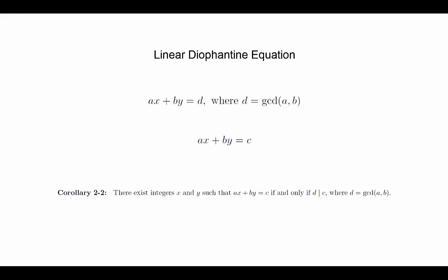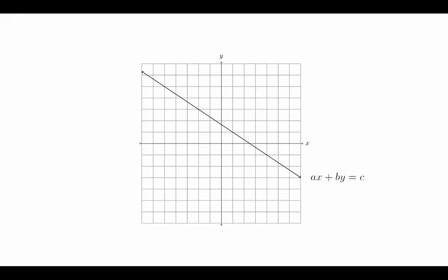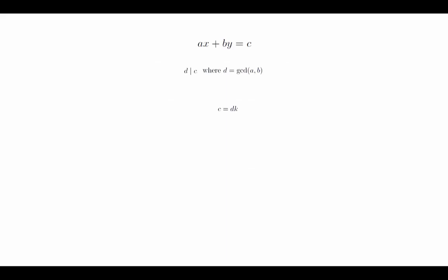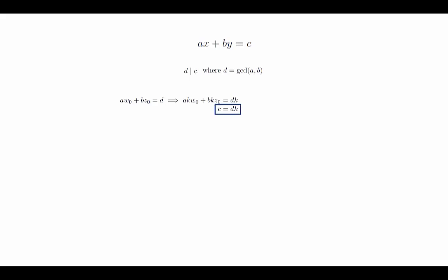We can look at this problem from the perspective of the Cartesian plane. The equation ax plus by equals c is the equation of a line. The points (x, y) where x and y are integers are lattice points on the plane. The question of finding solutions to the linear Diophantine equation is the same as trying to find points where the line crosses lattice points. Depending on the specific values of the parameters, there may be no lattice points or there may be infinitely many. Let's suppose that d divides c. Since d divides c, there exists an integer k such that c equals d times k. By corollary 2-2, we can find integers w0 and z0 such that a times w0 plus b times z0 equals d. We will multiply through by k, giving us a times kw0 plus b times kz0 equals c. By setting x0 equal to k times w0 and y0 equal to k times z0, we get a solution (x0, y0) to the equation ax plus by equals c.